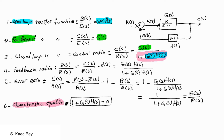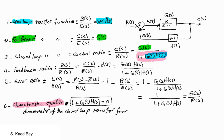In control theory, there are two main methods for analyzing feedback systems. The first method uses the transfer function or the frequency domain, and the second method is the state-space method.